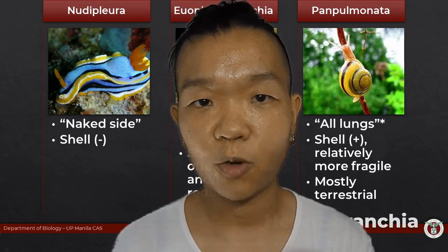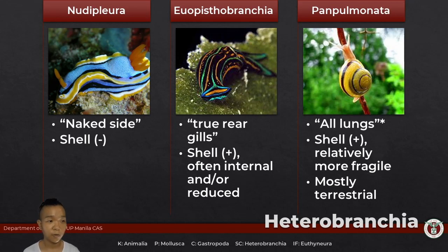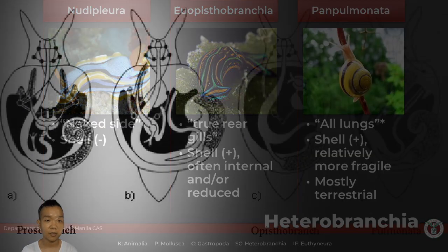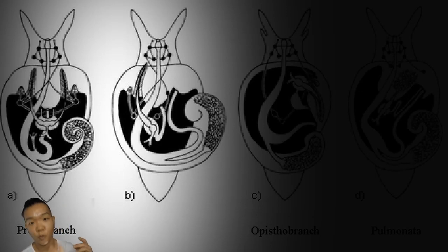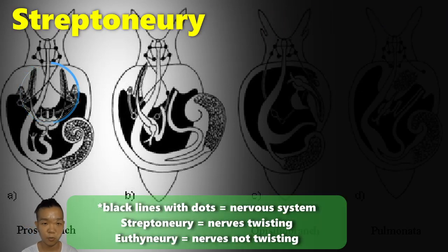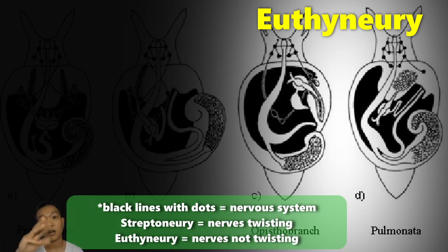How did that happen? Just as there's torsion, there is also detorsion — and that's this group. For the representatives in your laboratory, all of them belong under subclade Euthyneura. That has something to do with the configuration of the nerves along the body. One consequence of torsion is not just that the digestive tract gets twisted, but also the nervous system. Euthyneura means 'straight' — because of detorsion, there's the untwisting.